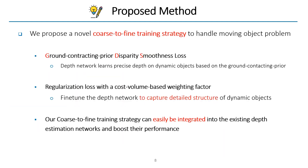To handle this moving object problem, we propose a coarse-to-fine training strategy, which guides learning of depth for dynamic objects based on the ground contacting prior using our GDS loss. Then, the depth network is fine-tuned to capture the detailed depth of dynamic objects under our regularization loss. Our coarse-to-fine training strategy can easily be integrated into existing depth estimation networks and boosts their depth estimation performance.